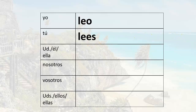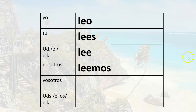Usted, él, or ella — they share the same ending. So we have lee. Again the two E's are in separate syllables: le-e. Nosotros leemos. Leemos — we read, we do read, we are reading.